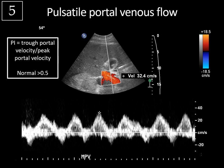Causes of pulsatile portal venous flow include right heart failure — the cause in this case — and tricuspid regurgitation. Severe cirrhosis with arteriovenous portal shunting can also cause this. Tricuspid regurgitation and right heart failure tend to show dilated hepatic veins, whereas cirrhosis tends to compress them due to fibrosis. Hereditary hemorrhagic telangiectasia with AV fistulas can also cause this, showing a very dilated hepatic artery and multiple tortuous intrahepatic AV fistulas. Importantly, increased portal vein pulsatility can also occur in young, healthy patients, so it's not always an indicator of pathology.